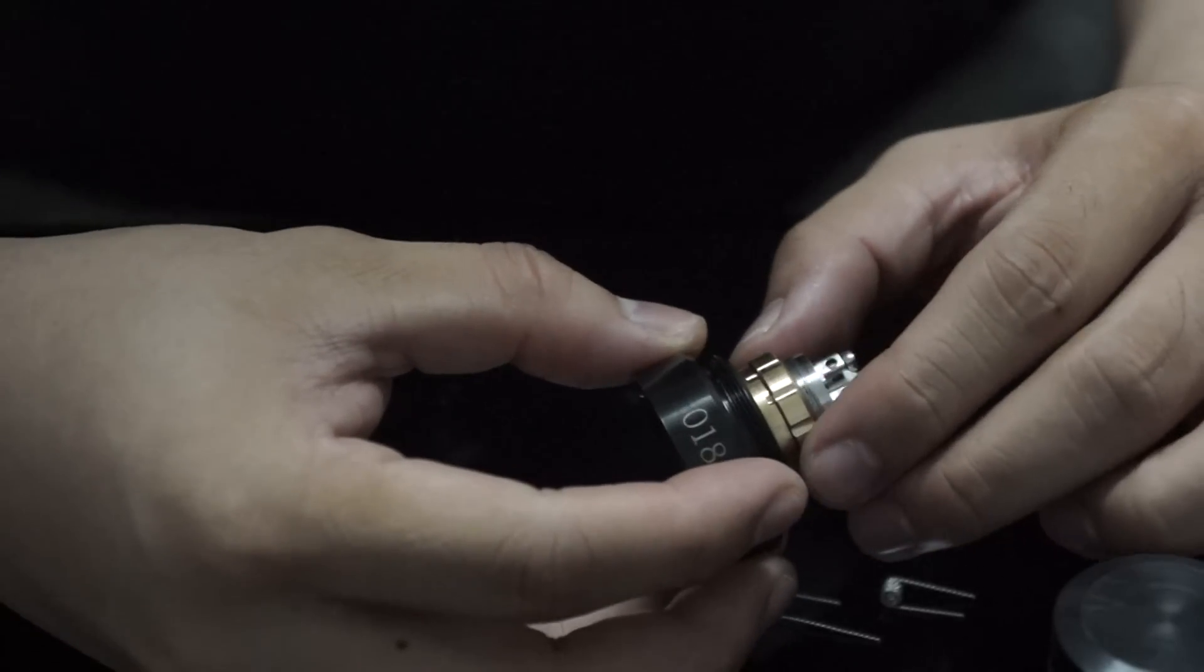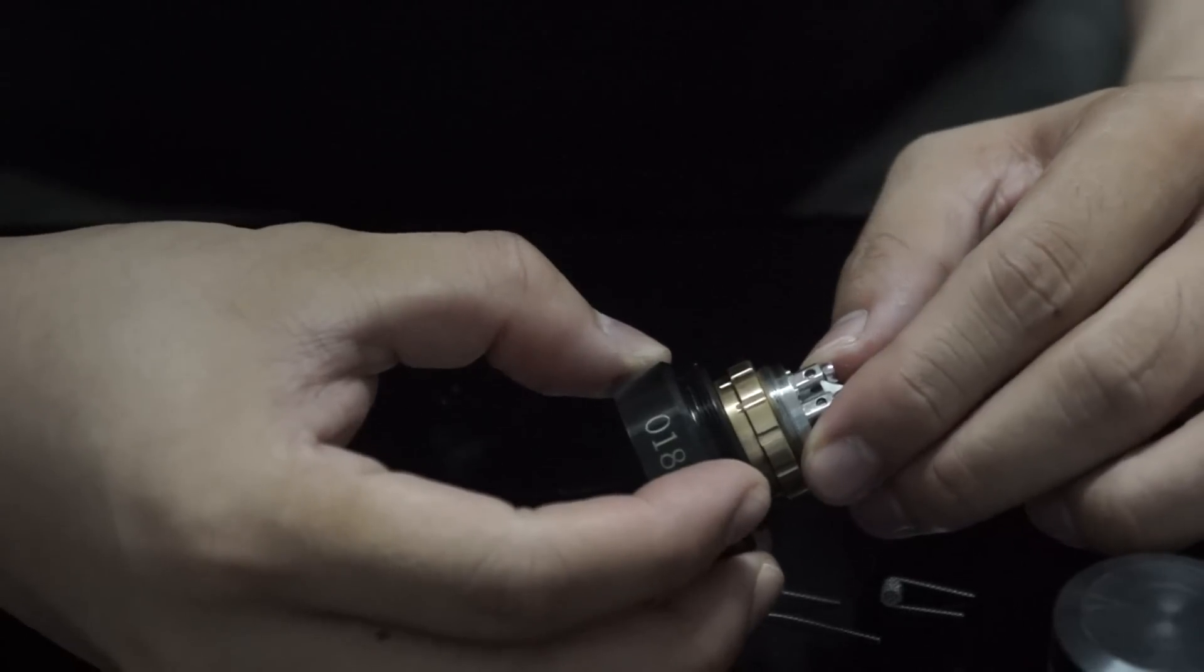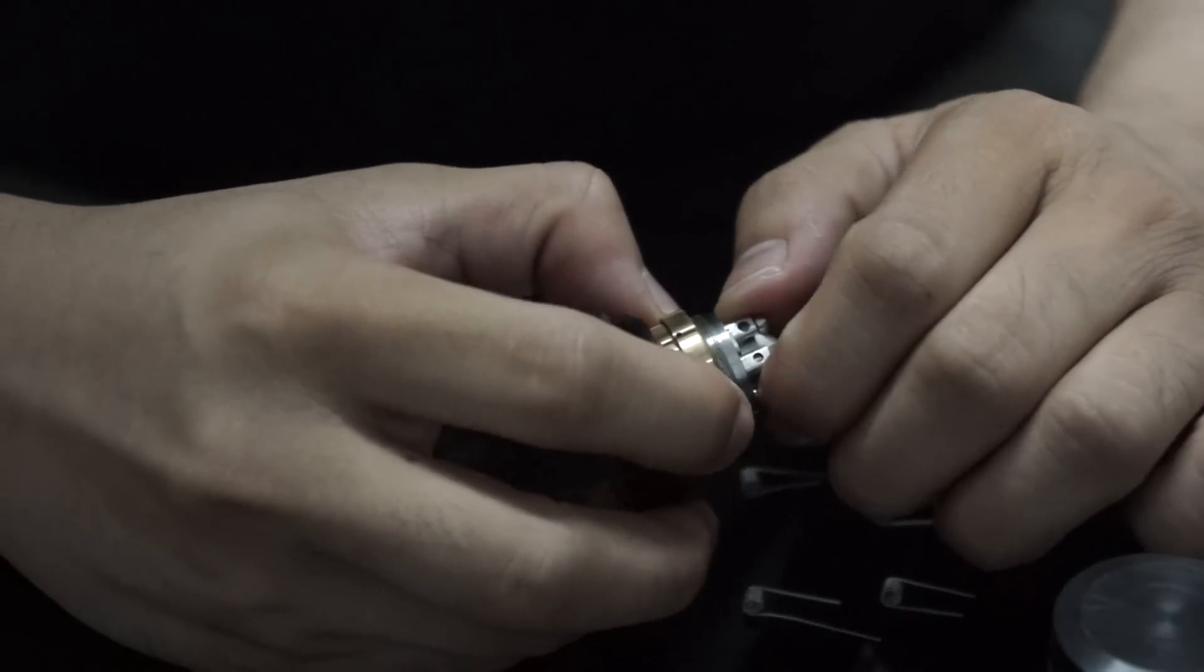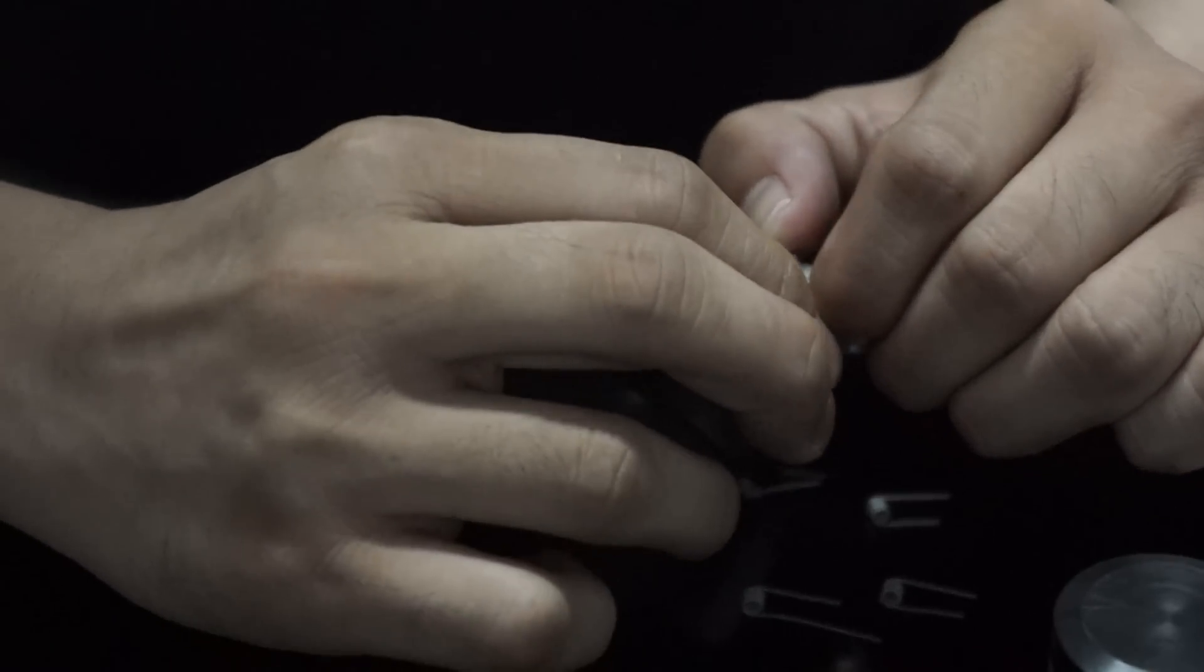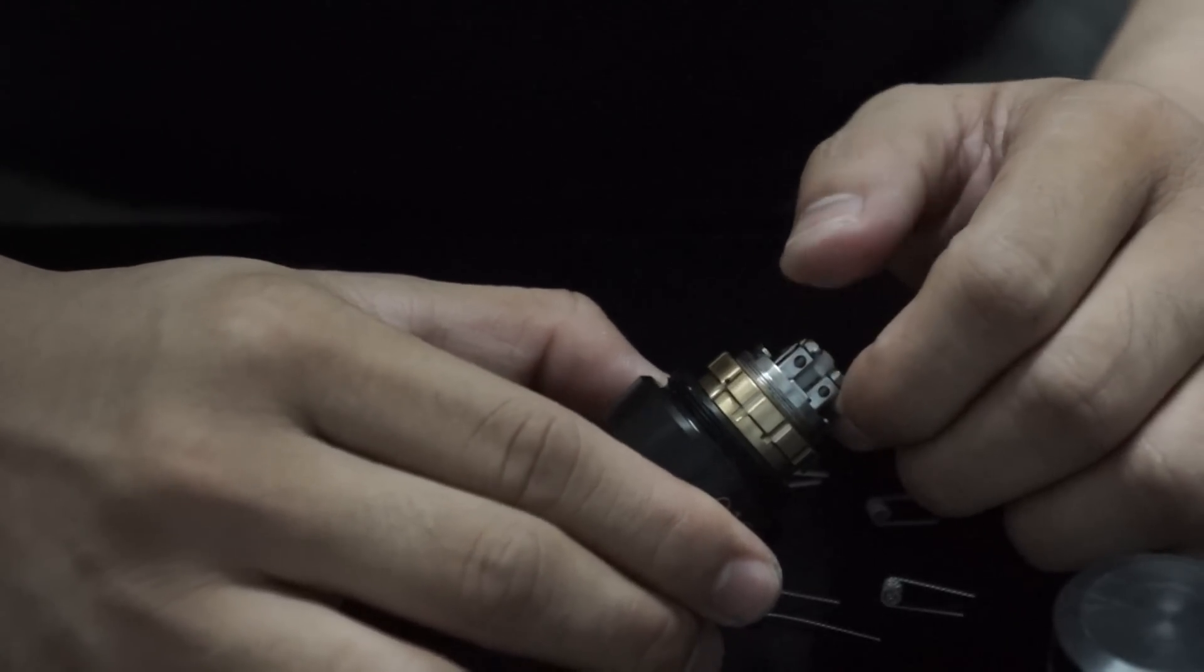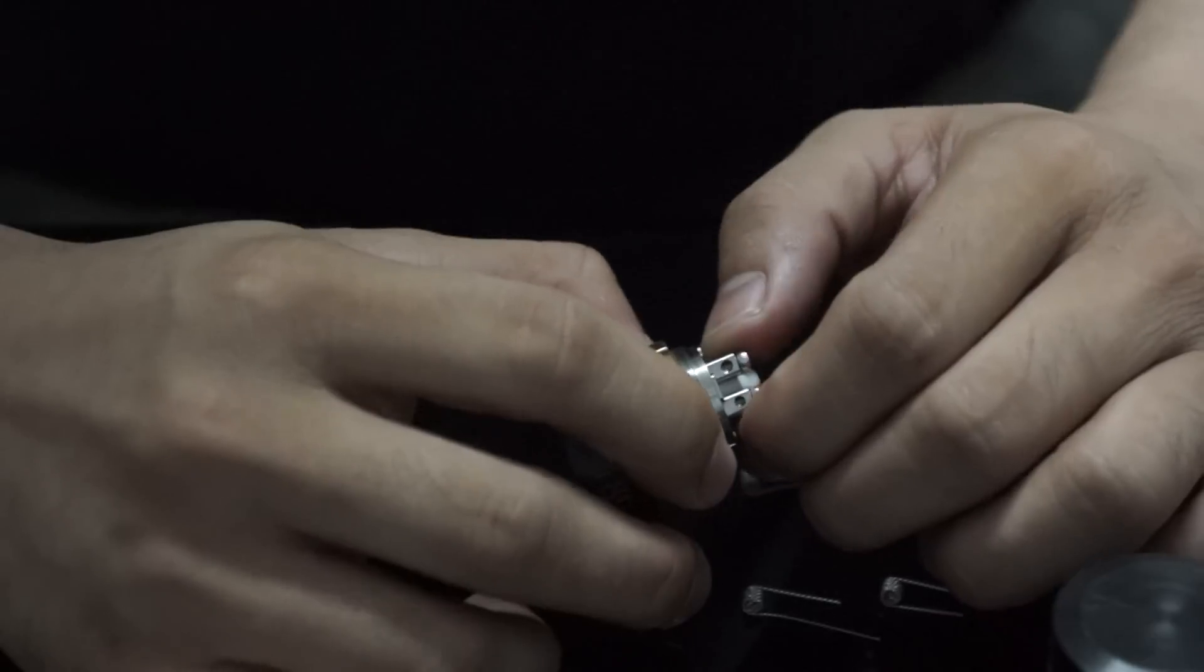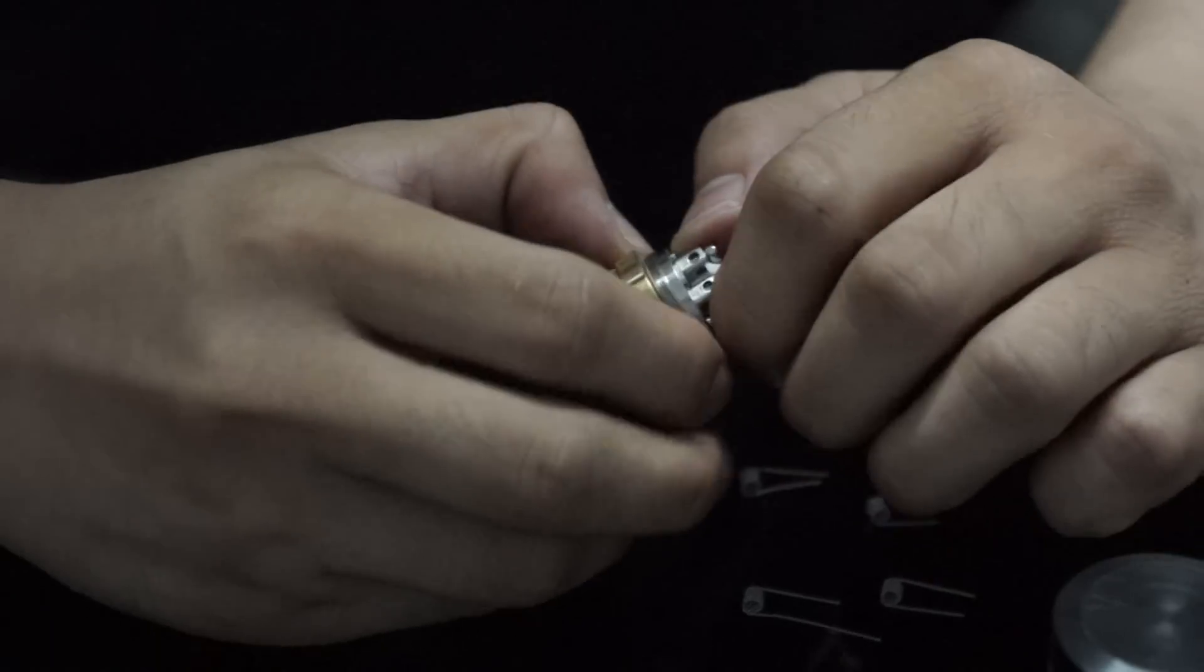So one of the first things that you need to know about the geyser is that it has the airflow selection ring on the base. So if the dot on the upper base is on the longest line right there, that means that all four air holes are open. If you put it in the second longest base line, I'm going to turn it up for you.